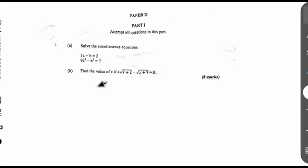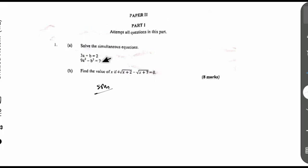Let's dive into the solution of this problem. The question says: solve the simultaneous equations. We have 3A plus B equal to 2, and we have 9A squared minus B squared equal to 7. Many of you, when you see an equation like this, think it's difficult to solve, but it's very simple. Let's go step by step on how to solve it.